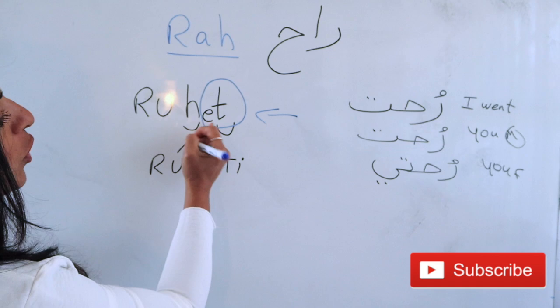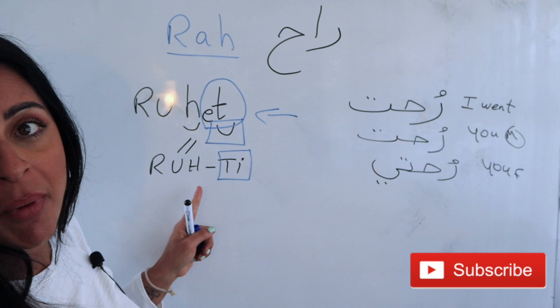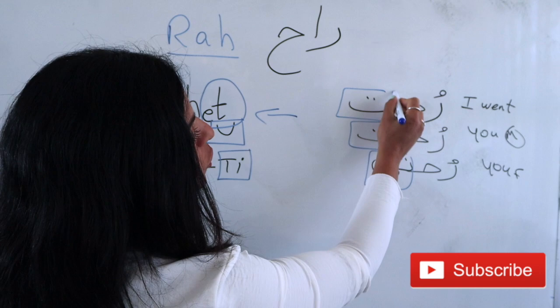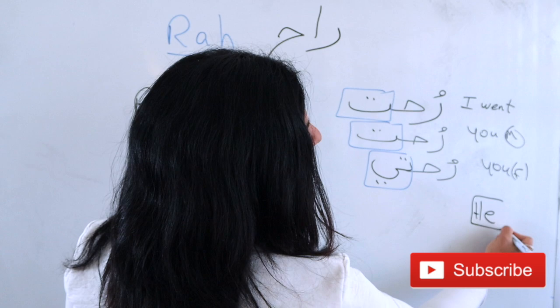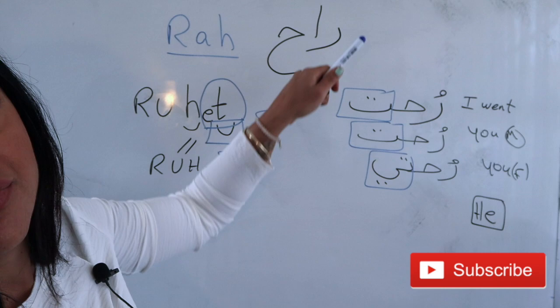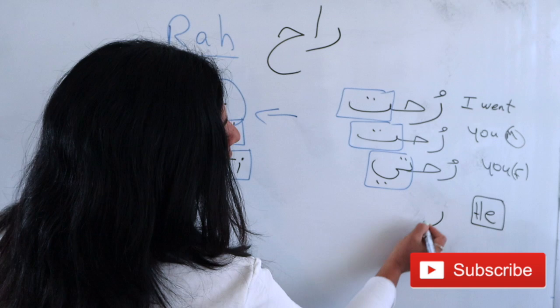For 'you male,' for 'you female' we add 'ti.' These are the suffix rules we add to each verb conjugation, whatever verb we're talking about. Then, 'he went' — huwe raah — is always the original or infinitive verb. I don't add anything for 'he.'